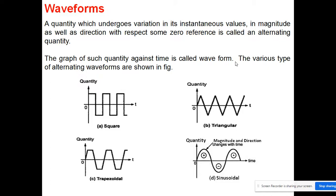If we are talking about waveforms, we will use the word 'sinusoidal waveform' many times. A waveform is a quantity which undergoes variation in its instantaneous value — at a particular point we want to see the value — in magnitude as well as direction with respect to a zero reference. This is called an alternating quantity.